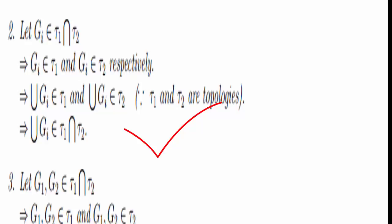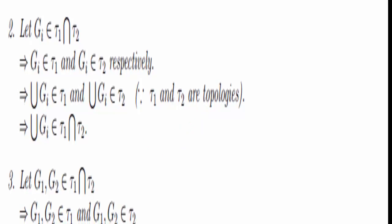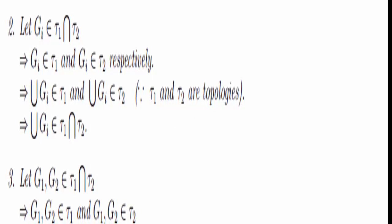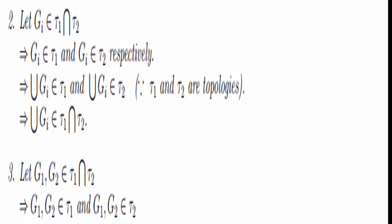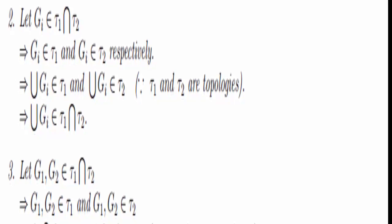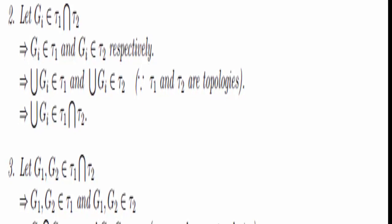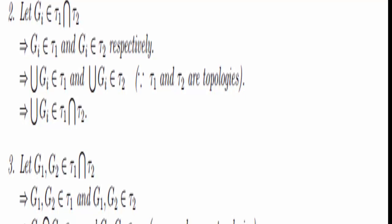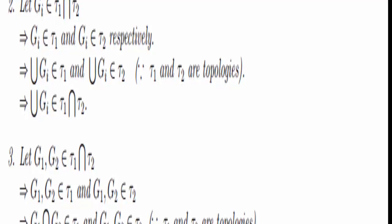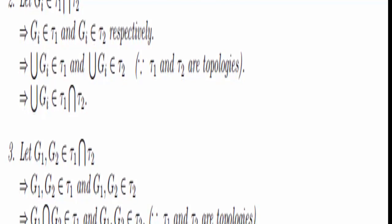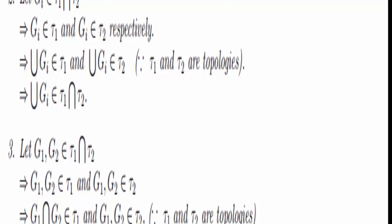The third condition is pretty much exactly the same — the proof is almost identical. We have to show that any finite number of open sets in the intersection is also in the intersection. Take any O₁, …, Oₙ in the intersection. Then all of these are in τ₁, and all of these are also in τ₂.